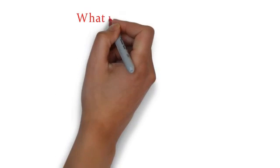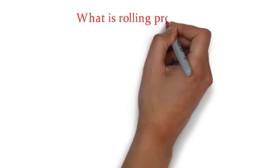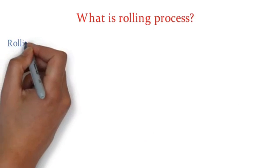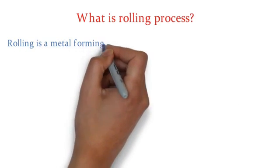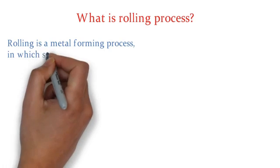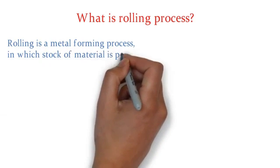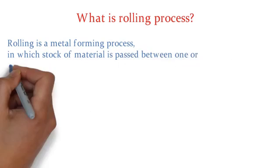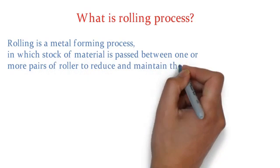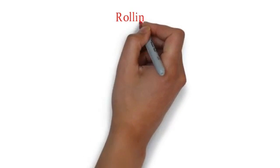First question comes in our mind: what is rolling process? Rolling is a metal forming process in which stock of material is passed between one or more pairs of rollers to reduce and maintain uniform thickness. Rolling process is classified as hot rolling and cold rolling.